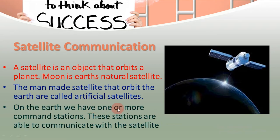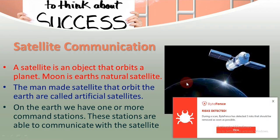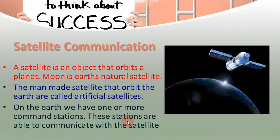On Earth, we have one or more command stations. This artificial satellite connects with Earth. We have specific command stations where different engineers and scientists operate its functions. These stations are able to communicate with the satellites and control their functionality.